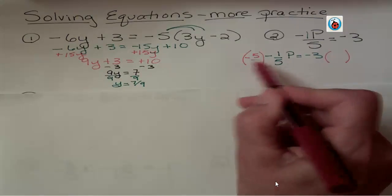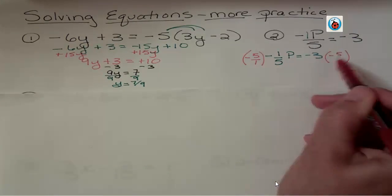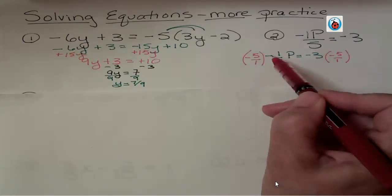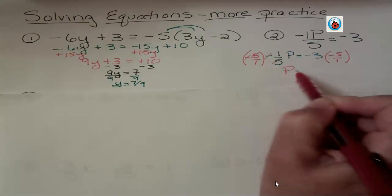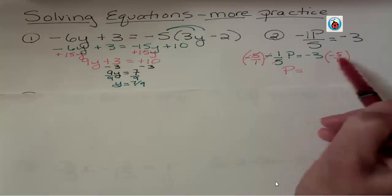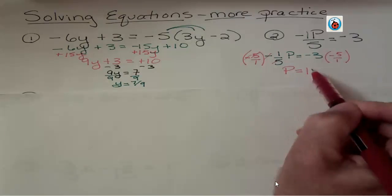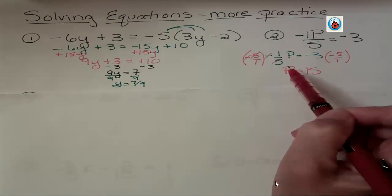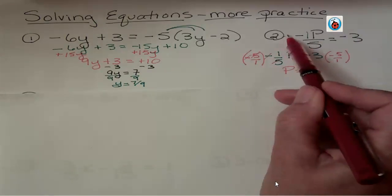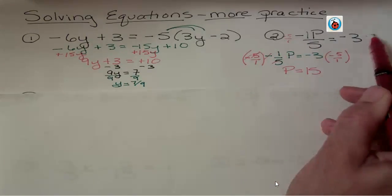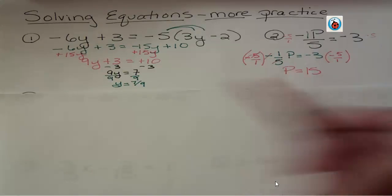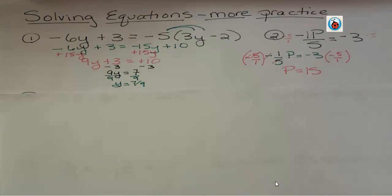We always want our coefficient to be positive 1. So if I multiply both sides by the reciprocal, these two negatives cancel out, these two 5s cancel out. I get 1p, which is what I want. Over here, negative 3 times negative 5 is positive 15. Did I need to rewrite that? No. I could have just multiplied both sides by negative 5. I was just showing you how to rewrite it as a fraction and how that's similar to things we've already done.